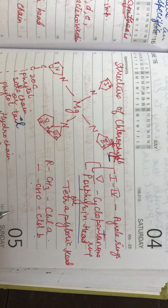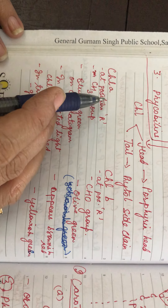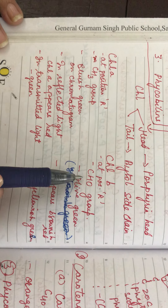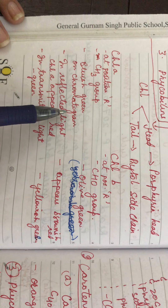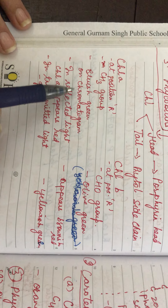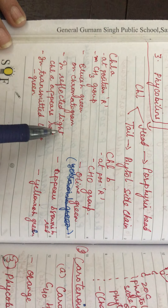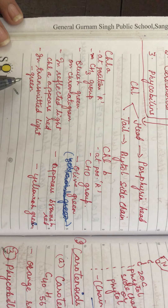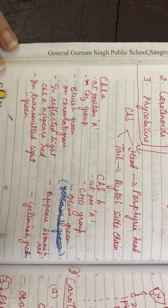Chlorophyll A has a methyl group at position R; chlorophyll B has an aldehyde group at position R. On a chromatogram, chlorophyll A is bluish green while chlorophyll B is olive green. In reflected light, chlorophyll A appears red while chlorophyll B appears brownish red. In transmitted light, chlorophyll A appears green and chlorophyll B appears yellowish green. These are the main differences between chlorophyll A and chlorophyll B.